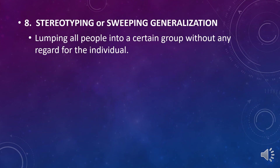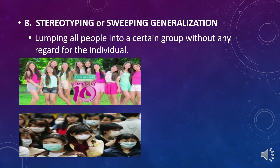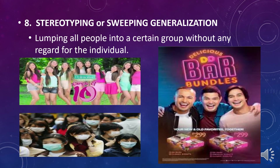Number eight is stereotyping, or sweeping generalization. It is lumping all people into a certain group without any regard for the individual. For example, a Palmolive commercial generalizes that women using Palmolive shampoo would have long black hair. Or the use of face masks generalizes that people won't get COVID-19. And an advertisement of Dunkin' Donuts featuring Derek Ramsey, Ding Dong Dantes, and Piolo Pascual generalizes that all people eating donuts are handsome — lumping all people into certain groups without any regard for the individual.